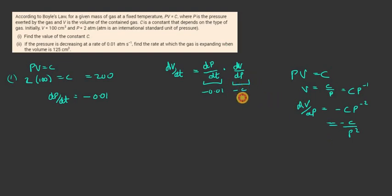Minus c over p squared. So I've got dv dt is equal to plus 0.01 c over p squared. And they want to find it when the volume... Now c, of course, I can replace c with 200 because we've got that. So I'll put c in as being 200 over p squared.